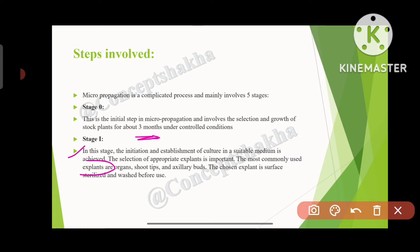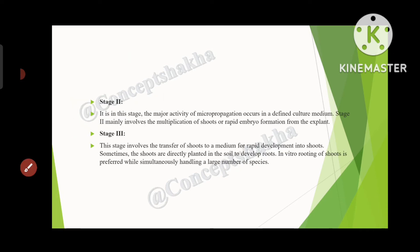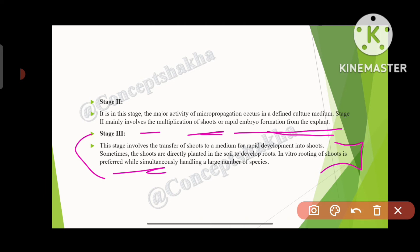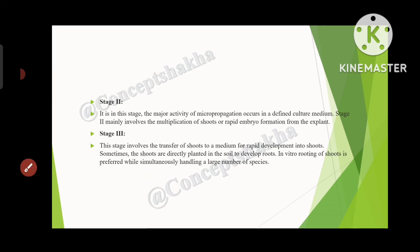We clean the explant properly so that there are no debris or microorganisms present. If the source plant is infected, the explant will also be infected, so we sterilize and wash it properly. In Stage 2, the major activity of micropropagation occurs in a defined culture medium — it mainly involves the multiplication of shoots or rapid embryo formation from the explant. Stage 3 involves the transfer of shoots to a medium for further development. Sometimes shoots are directly planted in soil to develop roots, but in vitro rooting of shoots is preferred when handling a large number of species.